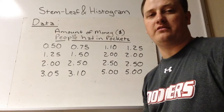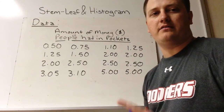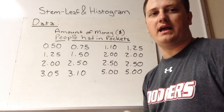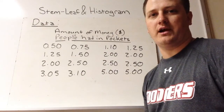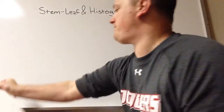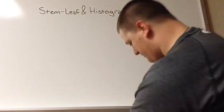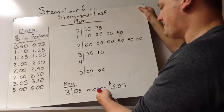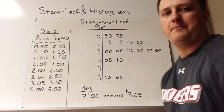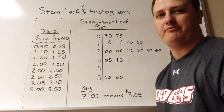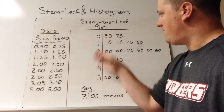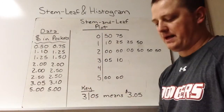We're now going to use this data to look at a stem and leaf plot and two histograms. I've already made a stem and leaf plot of this data, so here's the data again — money in the pockets — and here is our stem and leaf plot.